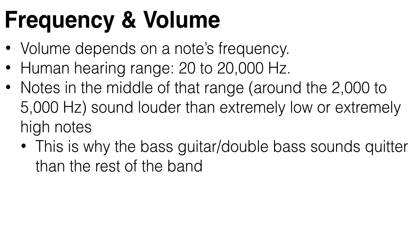So the volume of a note depends on its frequency. The hearing range of humans is from about 20 Hz to about 20,000 Hz. But notes in the middle of that range, around the 2,000 to 5,000 Hz range, sound louder than notes at the extreme bottom or extreme top of the range, even when playing at the same amplitude.